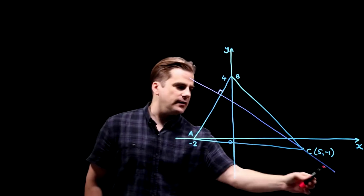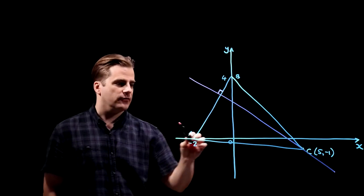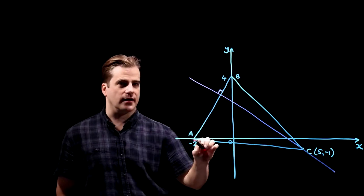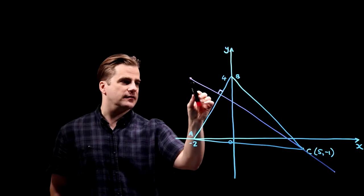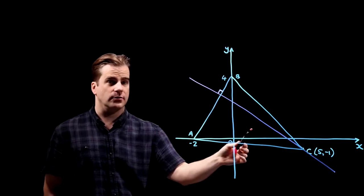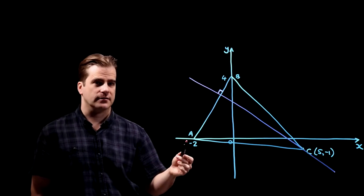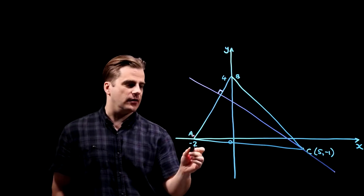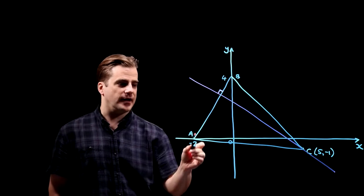We're going to get the gradient of our line from the gradient of this line. We're told that these two are perpendicular, so if you know the gradient of one, you know the gradient of the other. It's the negative inverse. So let's work out the gradient of AB.